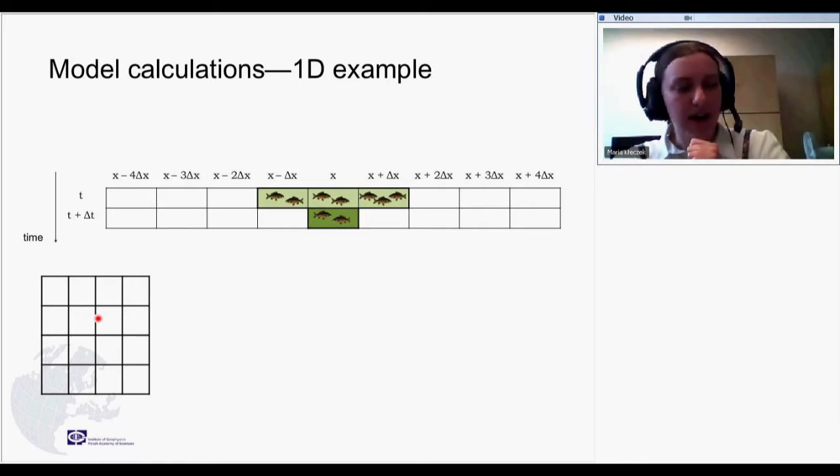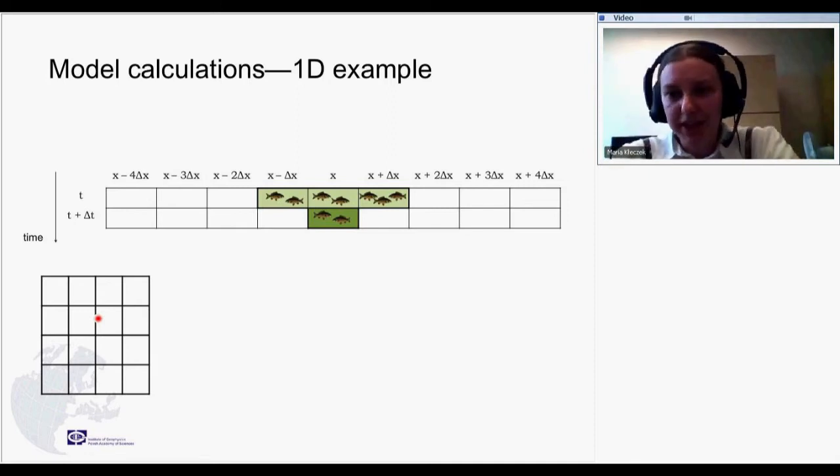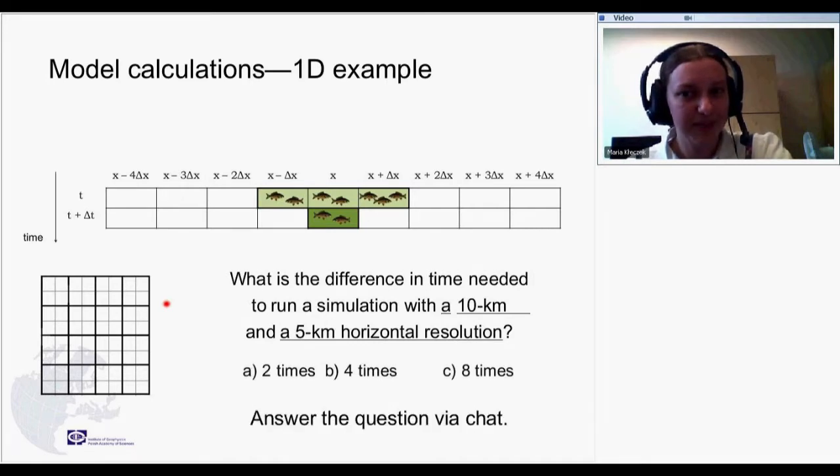Well, how do you think? What is the difference in time needed to calculate the forecast with a 10-kilometer and a 5-kilometer horizontal resolution? How many times more? Two times? Four times? Or eight times? I'd like to know your answers. Please give them to me via chat.